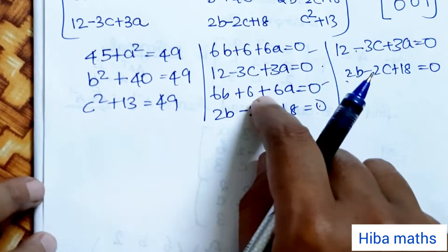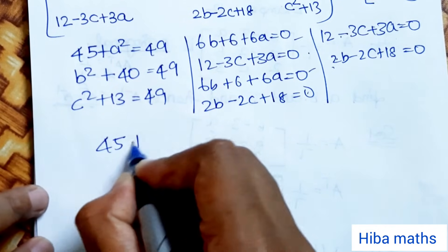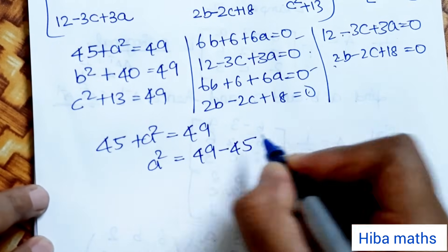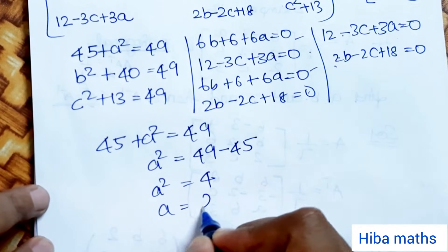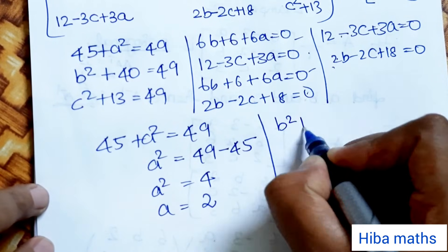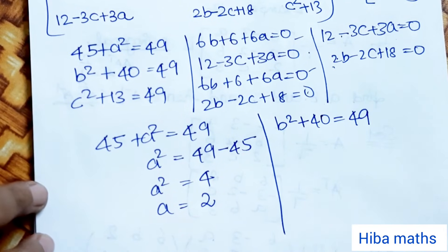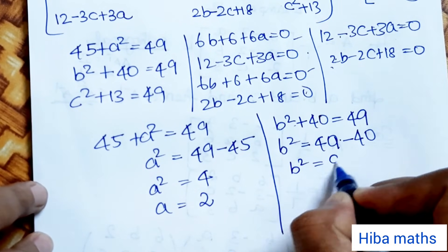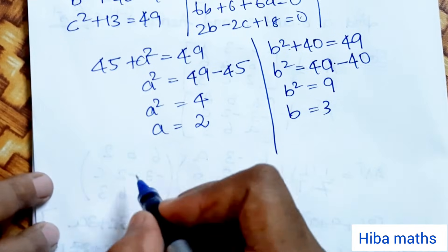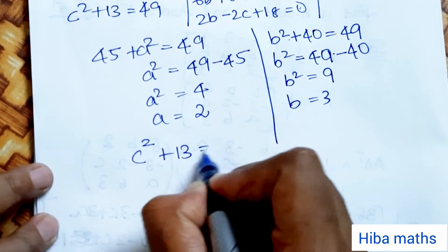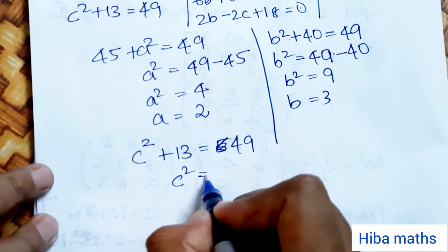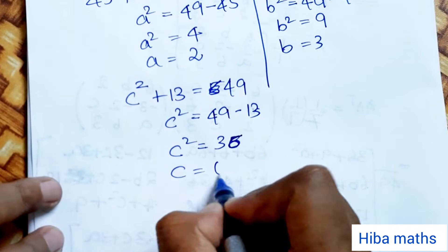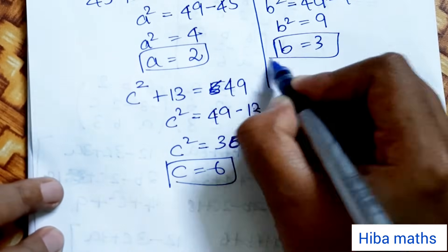Solving the equations: b squared plus 40 equals 49, so b squared equals 9, therefore b equals 3. For c: c squared plus 13 equals 49, so c squared equals 36, therefore c equals 6. We now have the values of a, b, and c to substitute into the matrix.